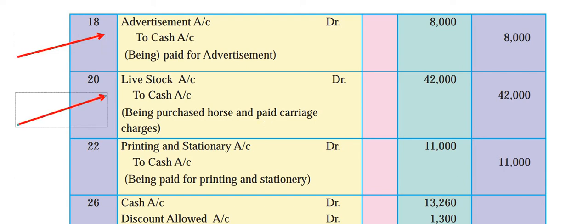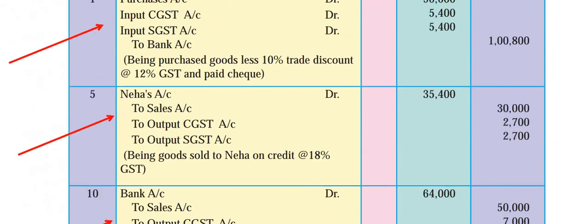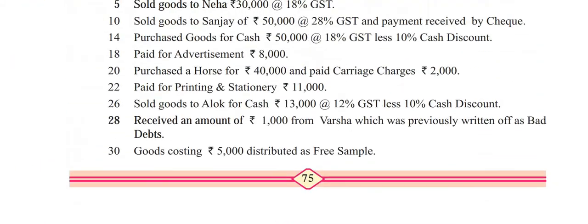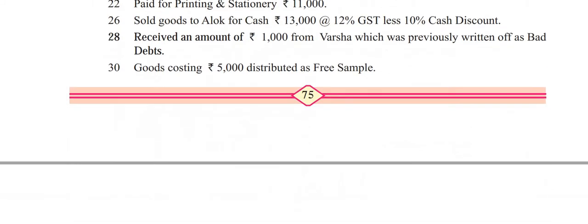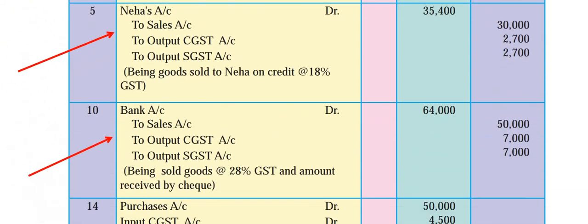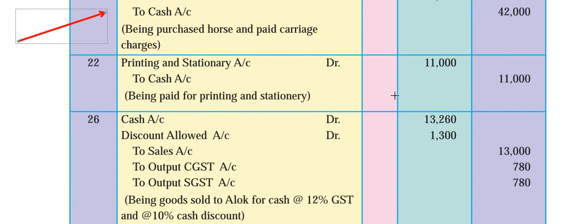22nd April - also simple: paid for printing and stationery 11,000. It's an expense, cash is going out. Printing and stationery account debit 11,000, cash account credit 11,000. Being paid for stationery. This transaction is done.